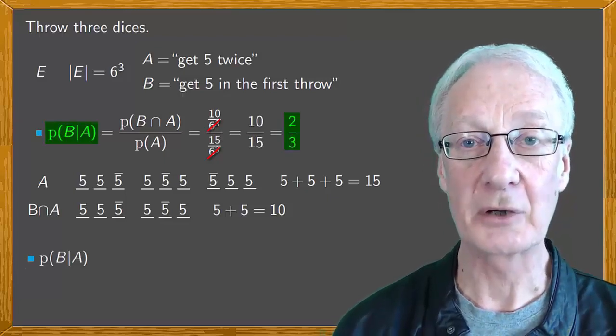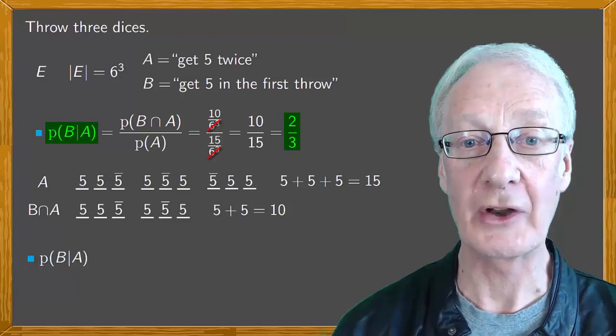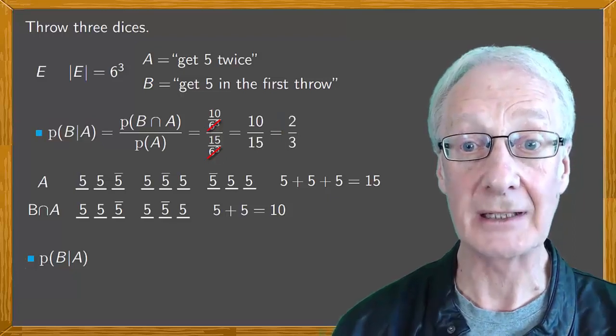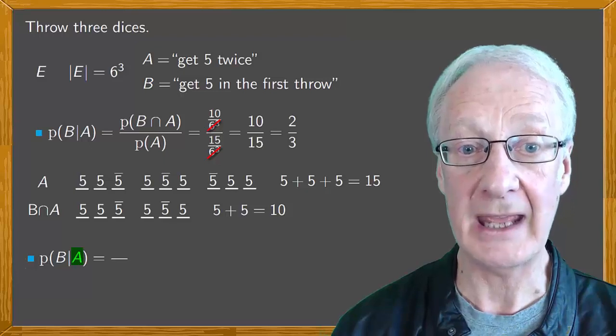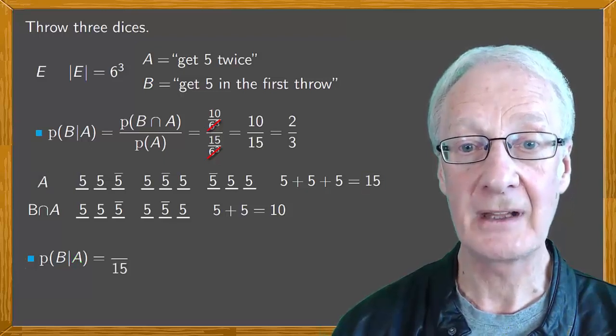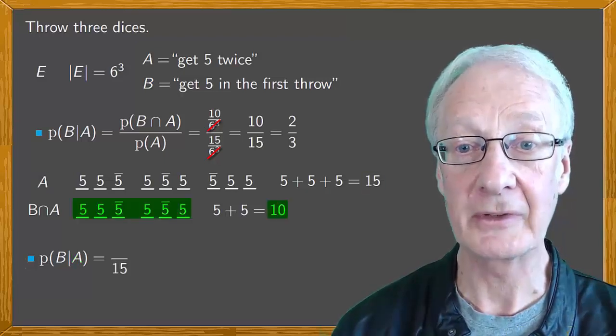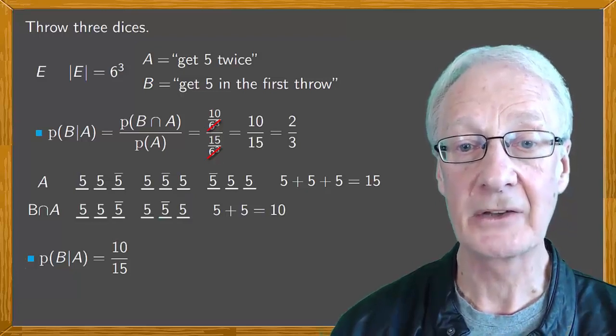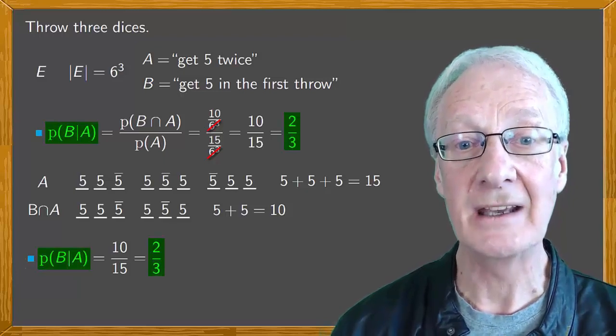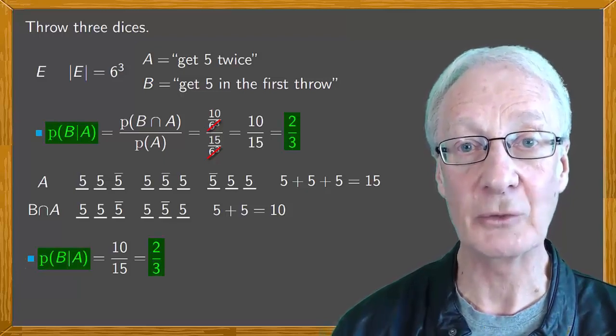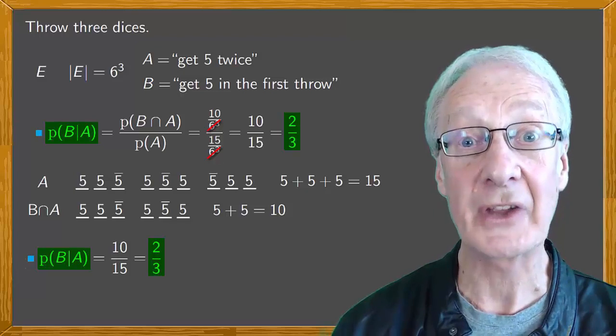Another way to calculate the probability of B conditional on A is to reason directly. We know the possible cases corresponding to A are fifteen, and the favorable cases that include B are ten. So again, we get two over three. And we can see that these two closely related ways of reasoning give the same outcome.